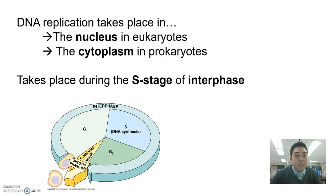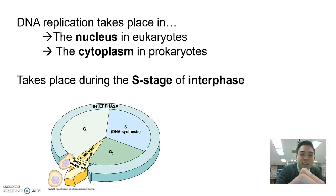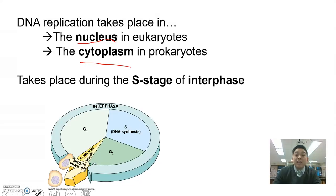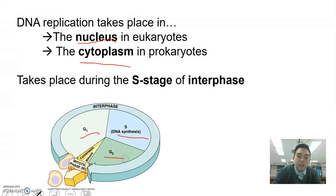DNA replication takes place both in eukaryotes and prokaryotes — anywhere that has DNA and where DNA needs to be replicated. In eukaryotes, DNA replication takes place in the nucleus, and also in the cytoplasm in prokaryotes. Looking at the diagram of the cell life cycle, we have our M phase, followed by the G1 or growth phase, followed by the S phase and the G2 phase. DNA replication takes place in the S phase of interphase.